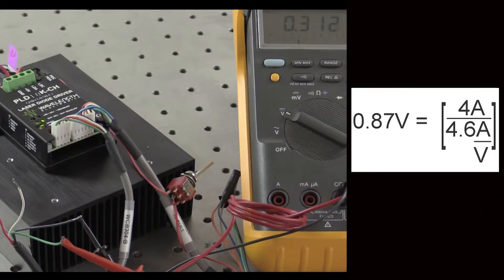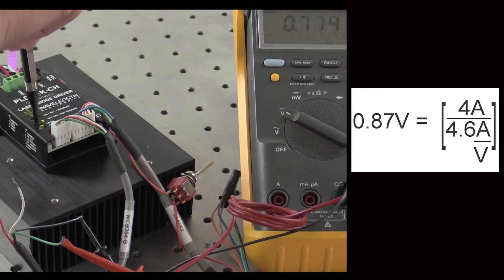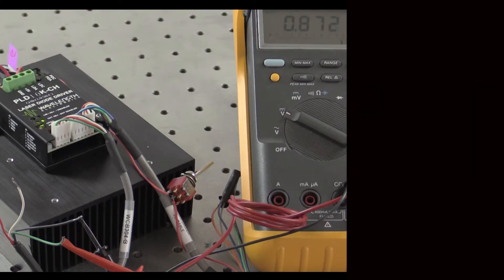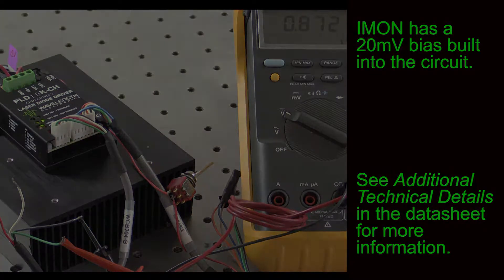This transfer function is also 4.6 amps per volt. For this example, we want to operate with a DC current of 4 amps. Rotate the output current trim pot clockwise until the actual current monitor reads 0.87 volts. Note that there is a 20 millivolt bias on the imon signal. Actual current is slightly less than indicated.